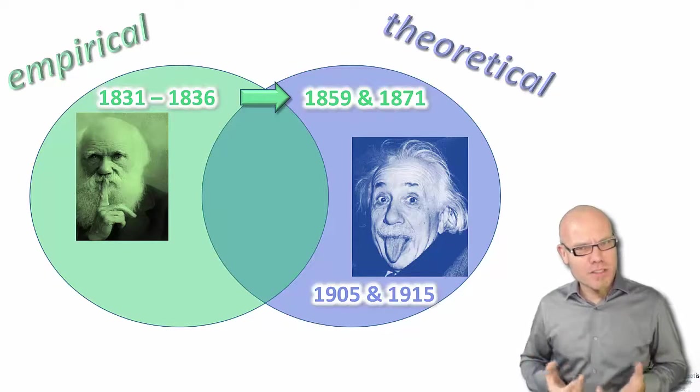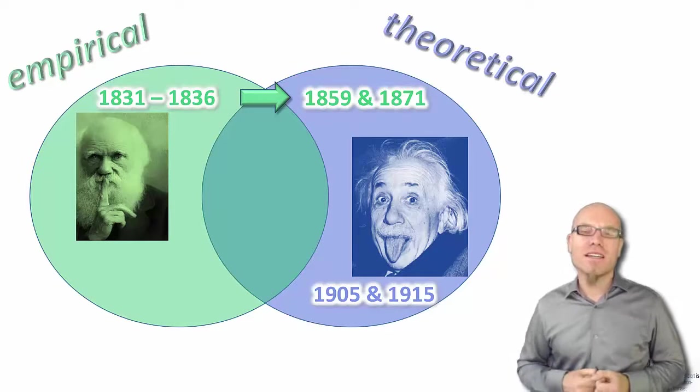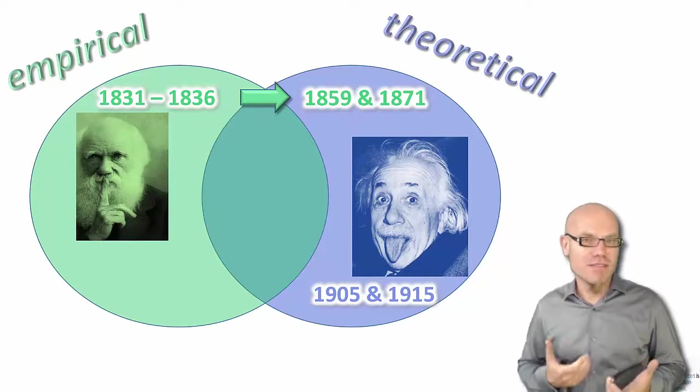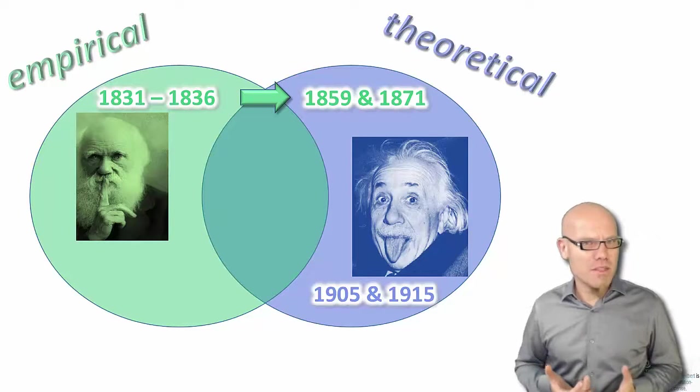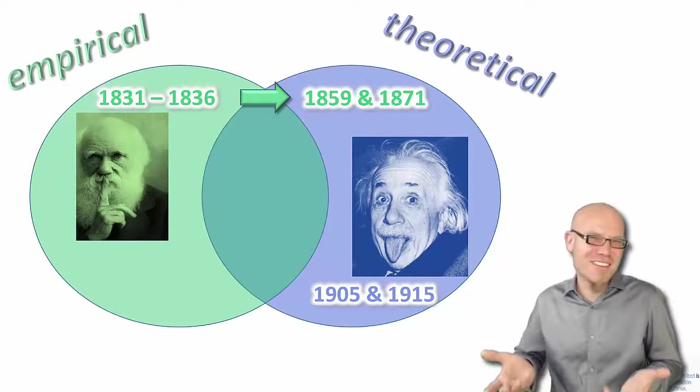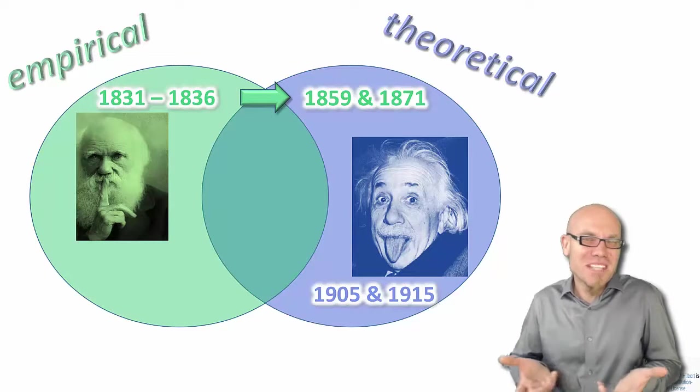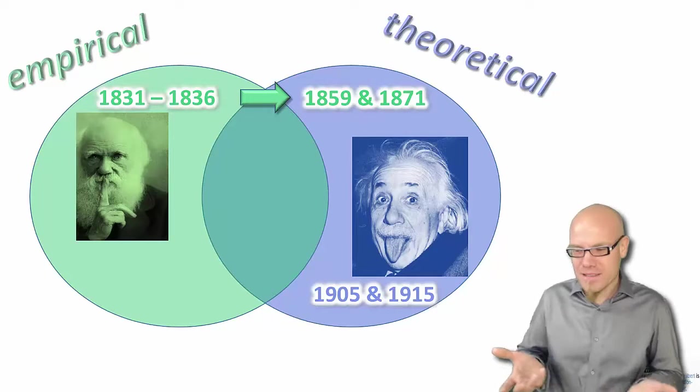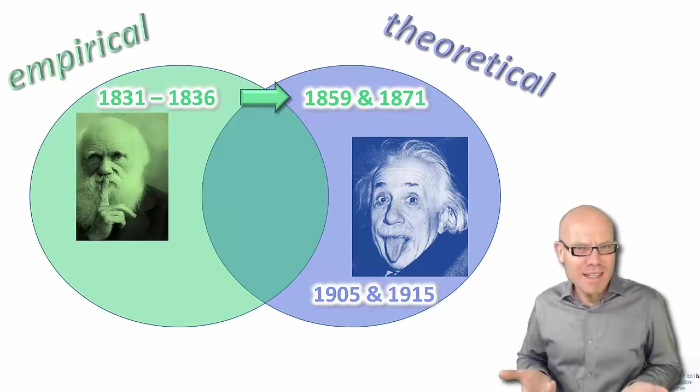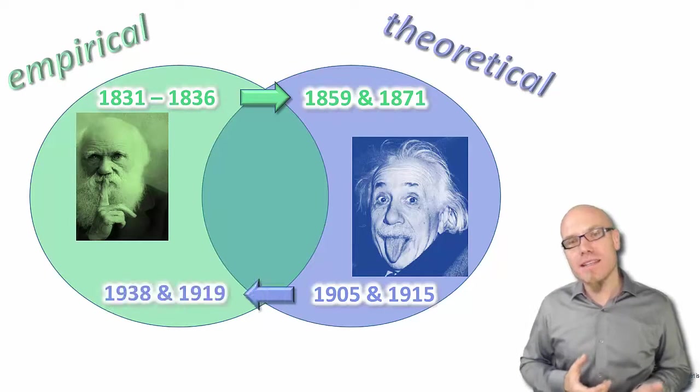And it was not like Einstein published his theory of relativity in 1905, or 1915, then the general theory, and he was instantly world famous. No, people ridiculed him. People said, well, what a crazy idea. That does not necessarily have something to do with reality. The math is pretty, but with reality?